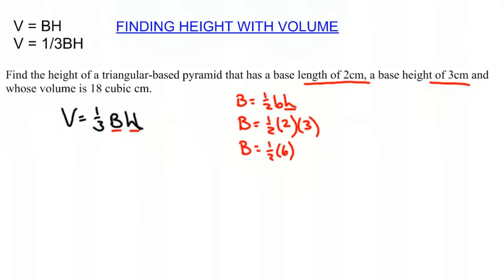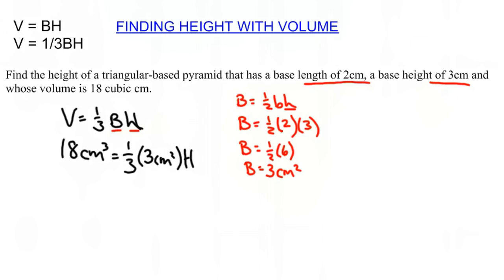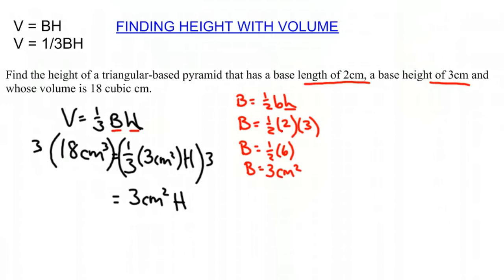Our base area is going to be one-half times 6, which is 3 centimeters squared. So we have our volume, which is 18 centimeters cubed, equals one-third times base area of 3 centimeters squared times height H. We're going to multiply each side by 3 to get rid of that one-third.